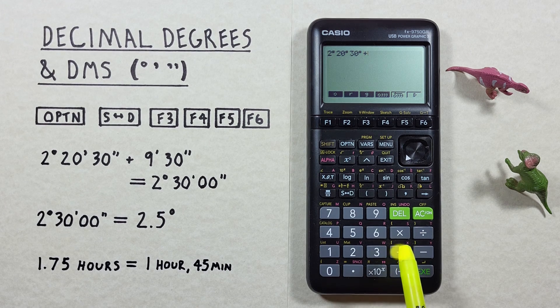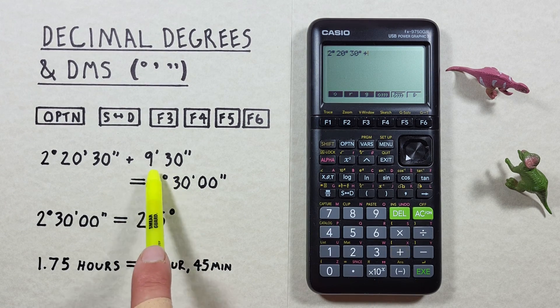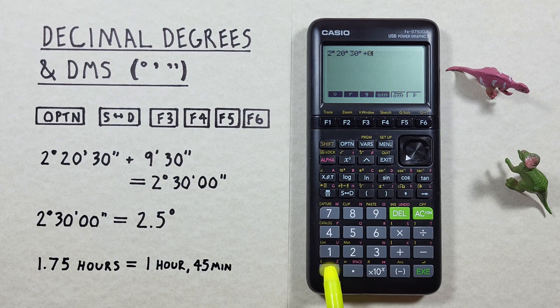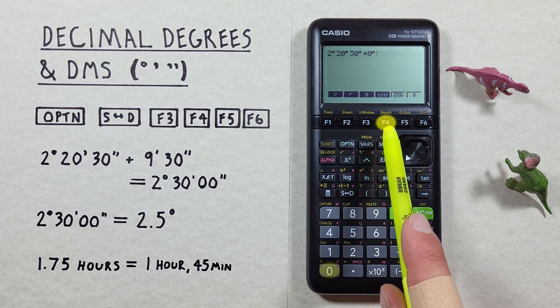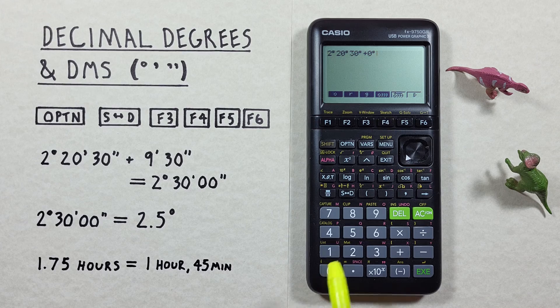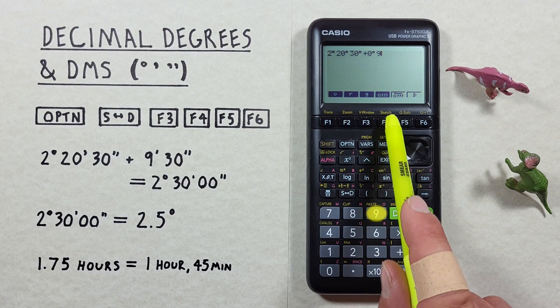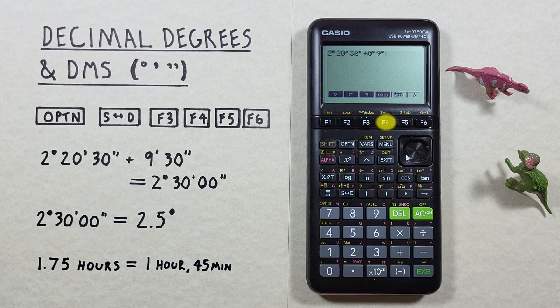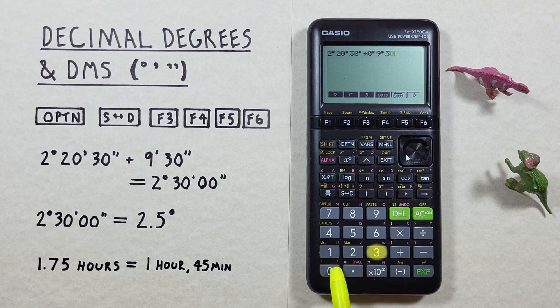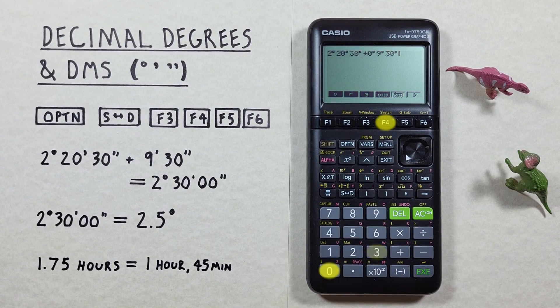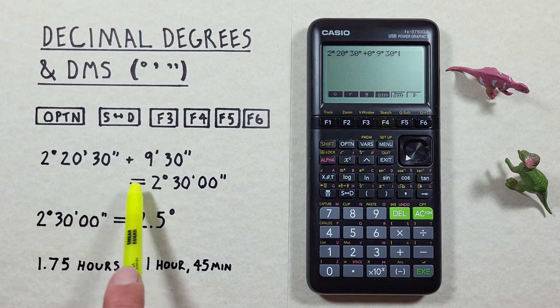Now we go plus and now we have zero degrees here. So we go zero F4, nine minutes, 30 seconds. There we go. We've got that entered.